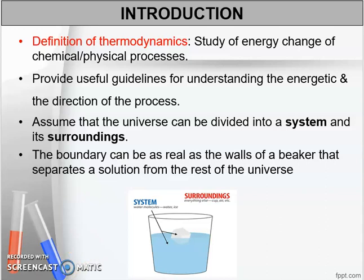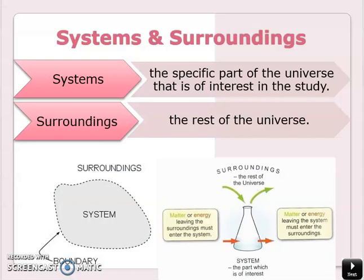To know more, let's look at the exact definitions for system and surrounding. The system is the specific part of the universe that is of interest in the study — meaning we are interested in what happens in the system in terms of their internal energy, enthalpy, and so on. The surrounding is the rest of the universe, or everything outside the system. To separate them we must have a clear boundary. Because the universe only has system and surrounding, matter or energy that leaves the surrounding must enter the system, and matter or energy that leaves the system must enter the surrounding.